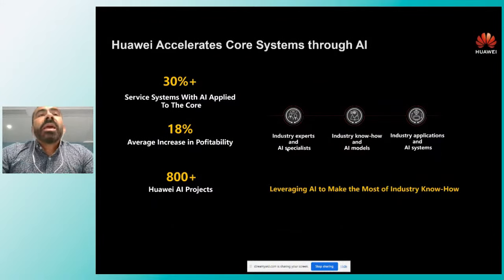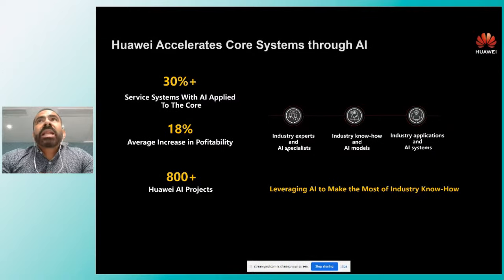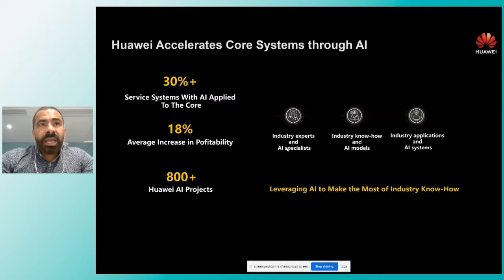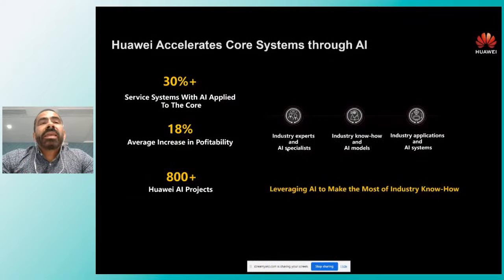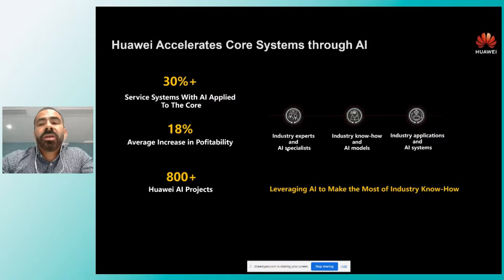Desde el punto de vista de Huawei, vemos que hasta el 30% de los sistemas en el core son susceptibles a contener componentes de inteligencia artificial. El mínimo de mejora en el desempeño de los procesos es del 18%, y en Huawei ya tenemos más de 800 proyectos que tienen algún grado de implementación de inteligencia artificial.